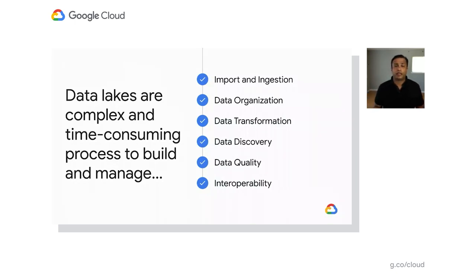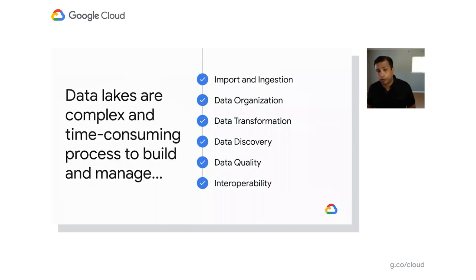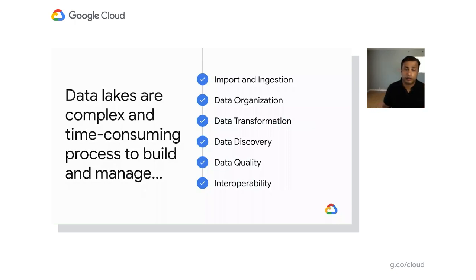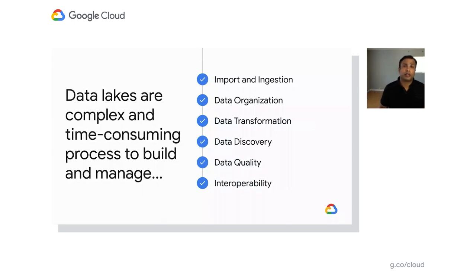Data quality is critically important. Data lakes were originally built to offload work happening within the data warehouse, so the CPU cycles could run queries. When you bring all that data together — structured, unstructured, and semi-structured — you need a cohesive strategy for ensuring quality as it progresses through the data lake towards the data warehouse or data mart. There also has to be interoperability — the lake must be accessible to all kinds of tools, whether open source or proprietary, so it's not isolated but integrated into the full ecosystem.